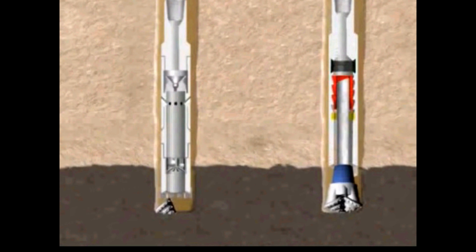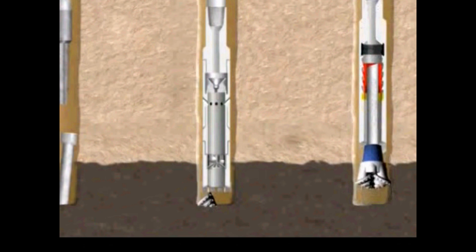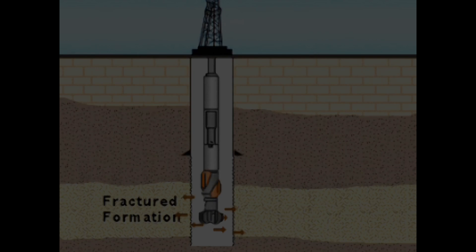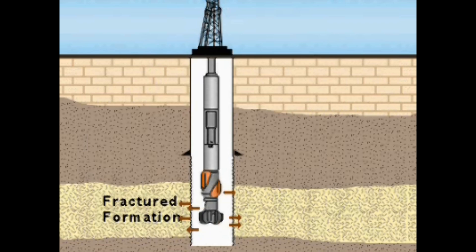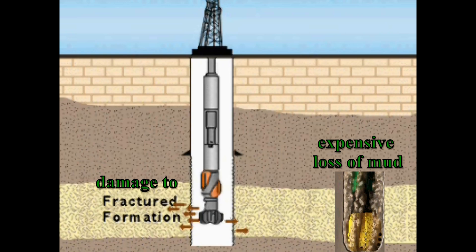Lost circulation is another serious problem. It is the result of hydrostatic pressure being higher than the formation pressure in an extremely overbalanced condition. The mud weight fractures the formation rock creating large channels causing the mud to flow rapidly out of the wellbore into the rock. This results in an expensive loss of mud and can damage the formation.